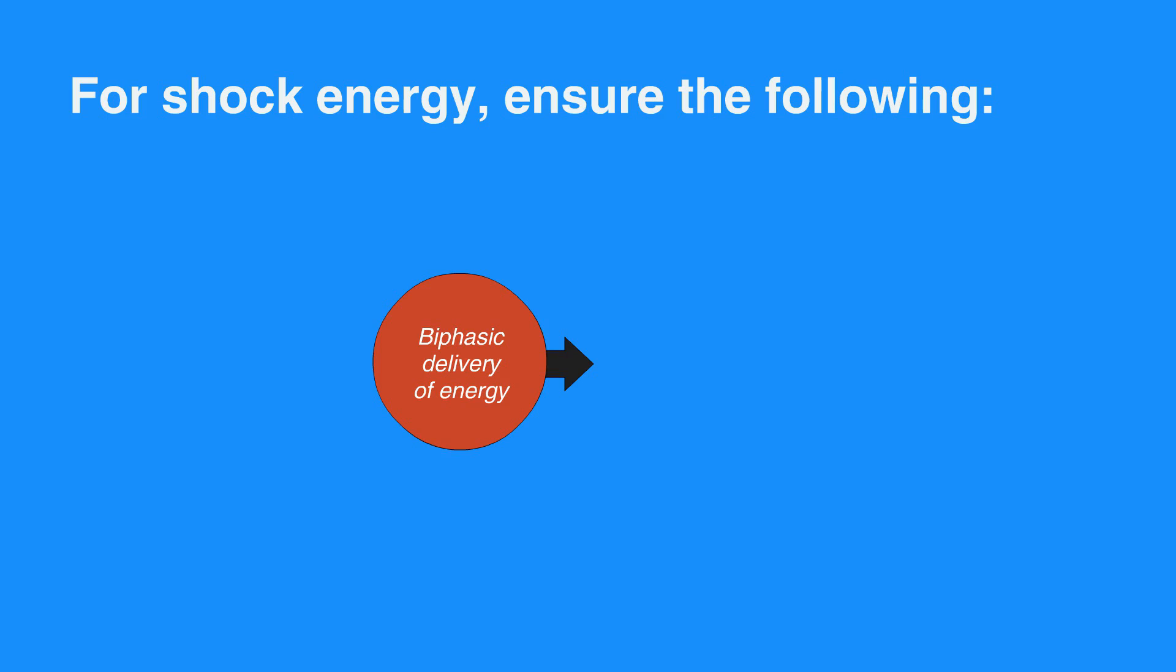Second and subsequent doses should be equivalent, and higher doses should be considered. Monophasic should be 360 joules.